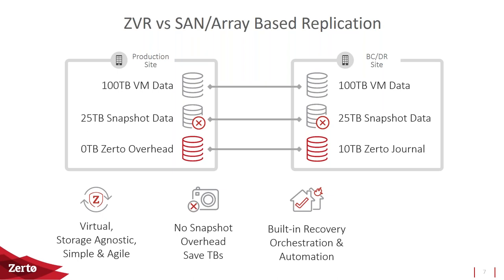The built-in recovery orchestration automation is important. With array-based replication it's not included — you either buy something on top of it, do it manually, or script it. That means a different management piece, different operational training, monitoring, and upgrade processes. You need to be aware of this when making selections. Also, being storage-agnostic means acquiring a company with different storage — you just plug Zerto into their site, replicate everything into your main site, and get that data into your data center much faster than a physical forklift move.